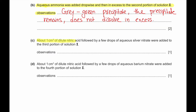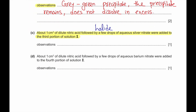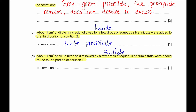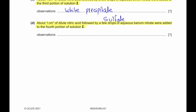Part C: Dilute nitric acid followed by a few drops of aqueous silver nitrate were added to the third portion of solution I. This is a test for halides. Since compound I is chromium chloride, a white precipitate will be observed. Part D: Dilute nitric acid followed by aqueous barium nitrate were added to the fourth portion — this tests for sulfate. Since there is no sulfate in this compound, the observation will be no change.